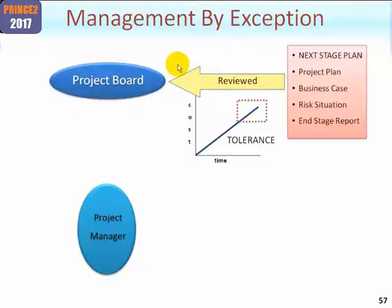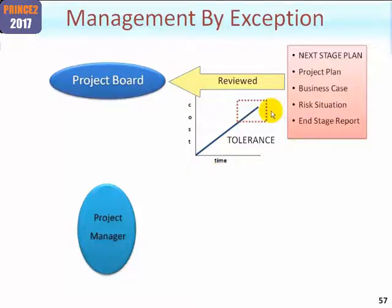At this juncture the project board, having reviewed the next stage plan and let's suppose they are happy with it, would set tolerance for the next stage. I've just shown an example of cost and time here, although it may be other metrics of tolerance. They'll also advise the project manager of how often they want highlight reports and what particular information should be included.